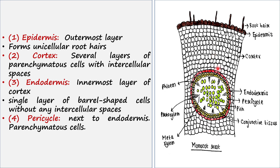The next layer is endodermis. Endodermis is the innermost layer of the cortex, and here you can find a single layer of barrel-shaped cells. These brown cells are endodermal cells — they are barrel-shaped, just one single layer, and they do not have any intercellular spaces.